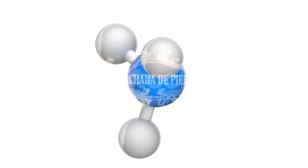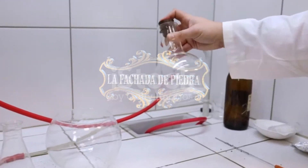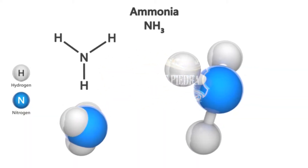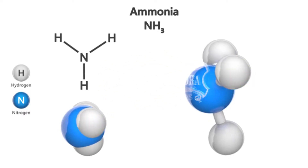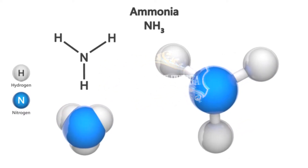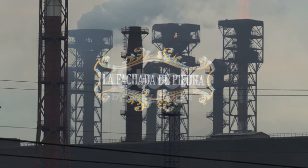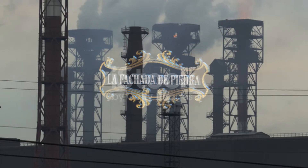El amoníaco es un gas formado por la combinación de un átomo de nitrógeno y 3 de hidrógeno. Es incoloro, más ligero que el aire, tiene un olor desagradable que irrita los ojos y las vías respiratorias, y tiene un sabor cáustico. El amoníaco es el derivado más importante del nitrógeno y es el camino para hacerlo activo; a través de él se obtienen los restantes compuestos. Es un compuesto químico indispensable para muchos productos que usamos a diario.